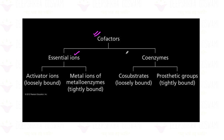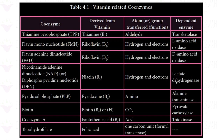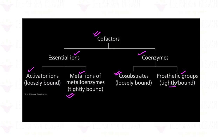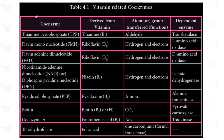Co-factors can be divided into two categories: activator ions, which are loosely bound metal ions, and metal ions of metalloenzymes, which are tightly bound. Co-enzymes can be co-substrates, which are loosely bound, or prosthetic groups, which are tightly bound. We are studying co-enzymes in relation to vitamins because vitamins are required in our body to form these co-enzymes — atoms and groups transferred are also mentioned here, and this is a frequent source of exam questions.